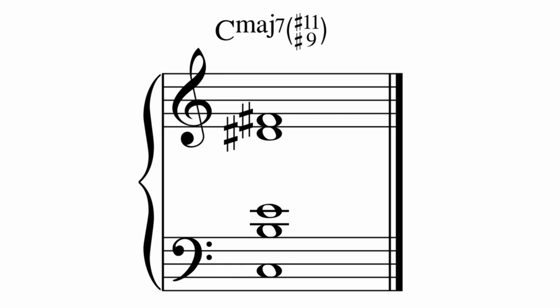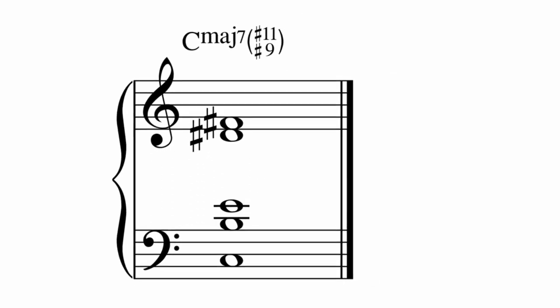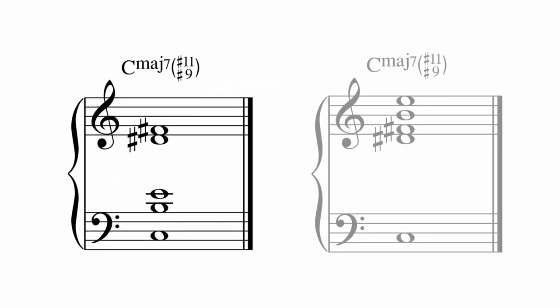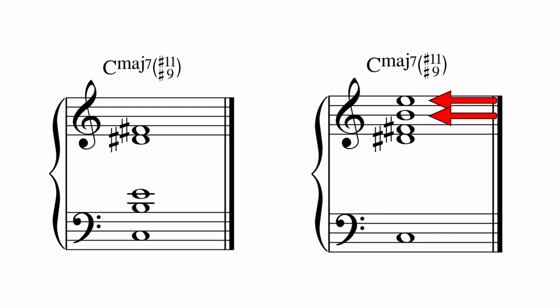Even though it's fairly dissonant, the 1st, 3rd and 7th help to stabilize the chord. Using the same pitches, but in different octaves, if I place the 3rd and 7th above the other colour tones, the sharp 9 and sharp 11th, what do you think will happen?